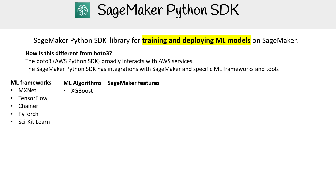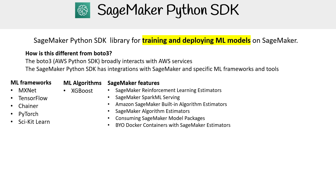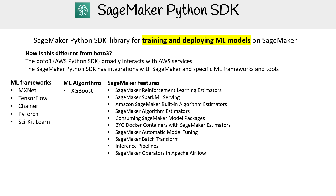For ML algorithms, we've got XGBoost. SageMaker features include reinforcement learning estimators, integrations for Spark ML serving, built-in algorithm estimators, more algorithm estimators, consuming SageMaker model packages, bring your own Docker containers with SageMaker estimators, SageMaker automatic model tuning, SageMaker batch transform, inference pipelines, SageMaker operators in Apache Airflow, SageMaker Autopilot, SageMaker model monitoring, SageMaker Debugger, SageMaker Processing, and probably more.